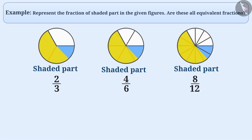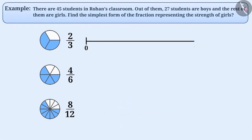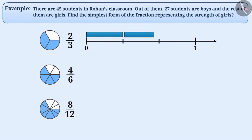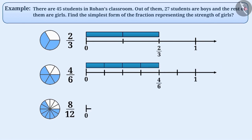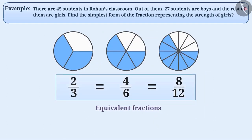By looking at the figures, it appears the values of all these fractions are equal, but the correct way to verify this is to represent them on the number line. Dividing the unit distance into equal parts, fractions 2 by 3, 4 by 6, and 8 by 12 are all represented at the same position on the number line, so their values are equal. That means all these fractions are equivalent.